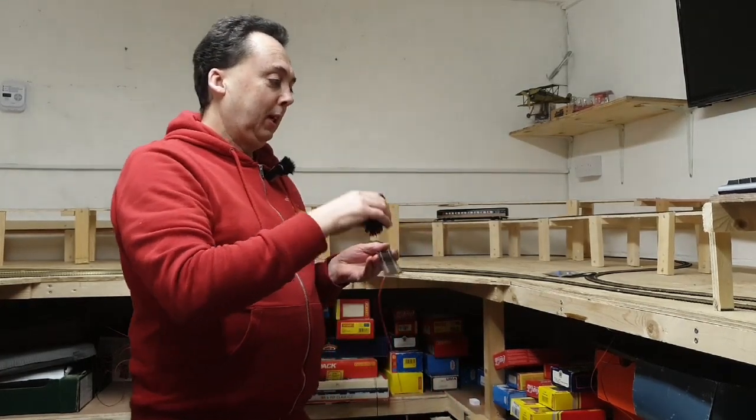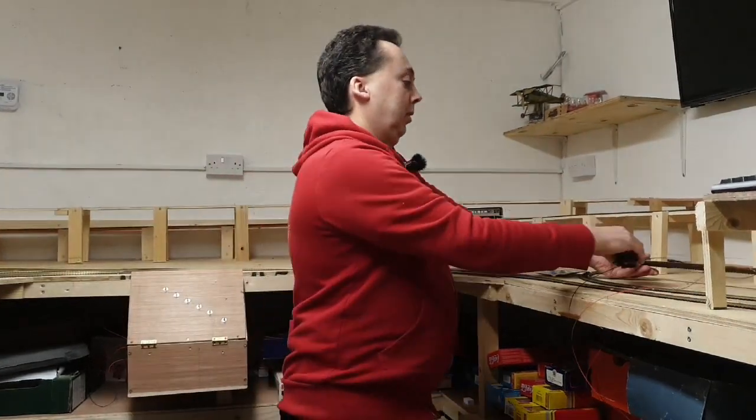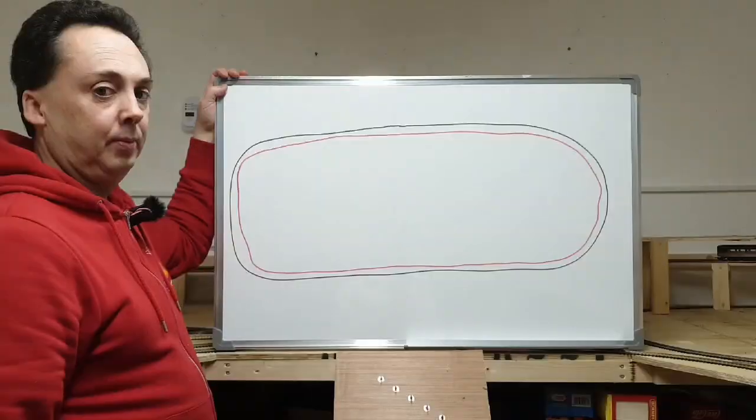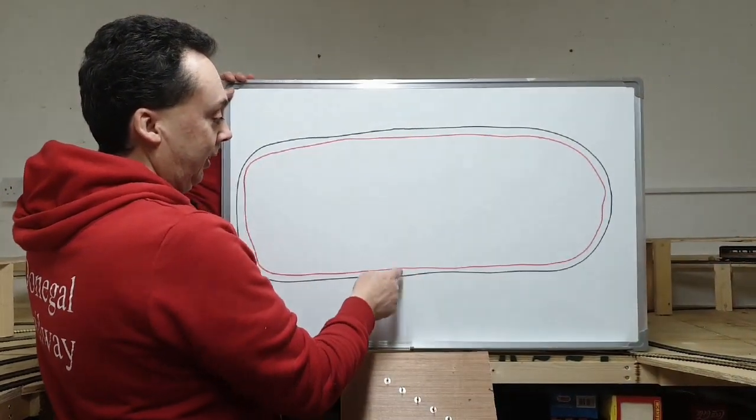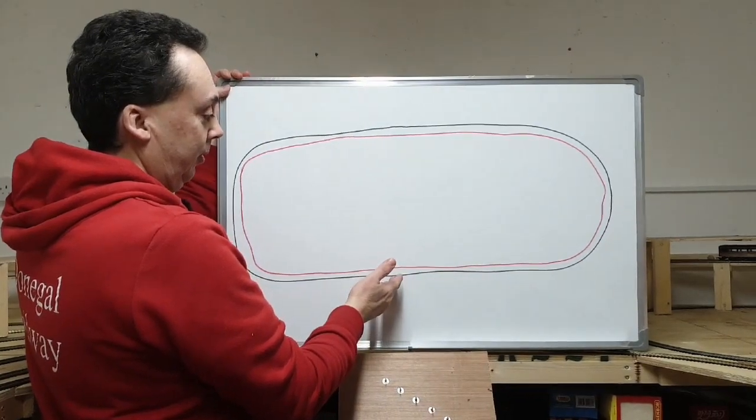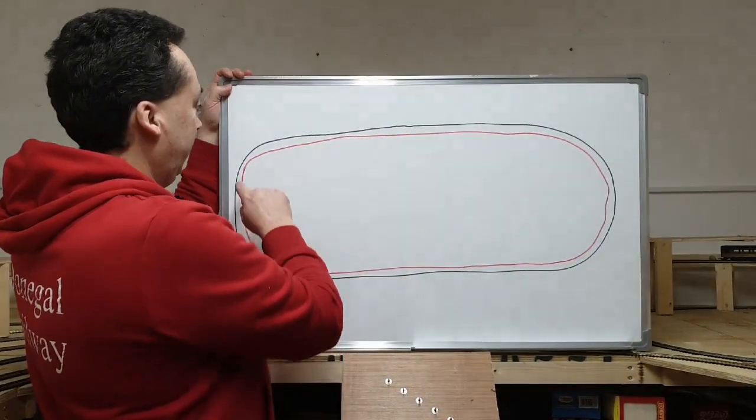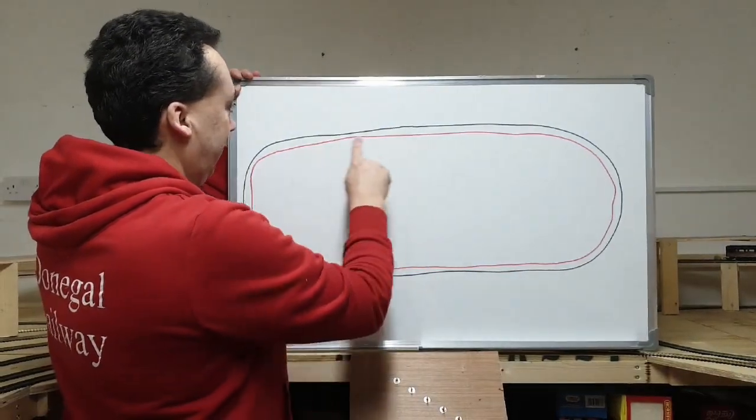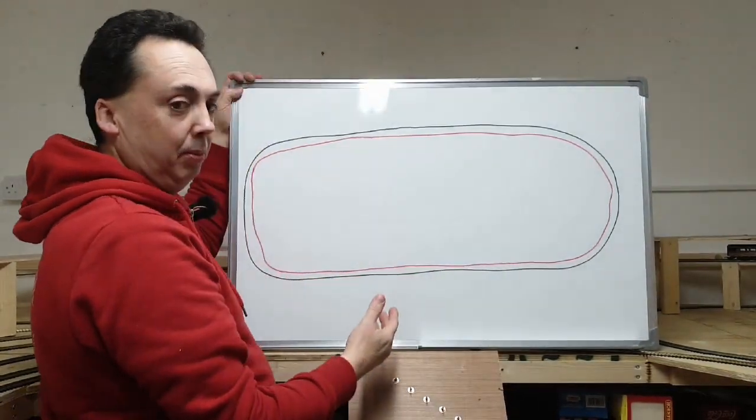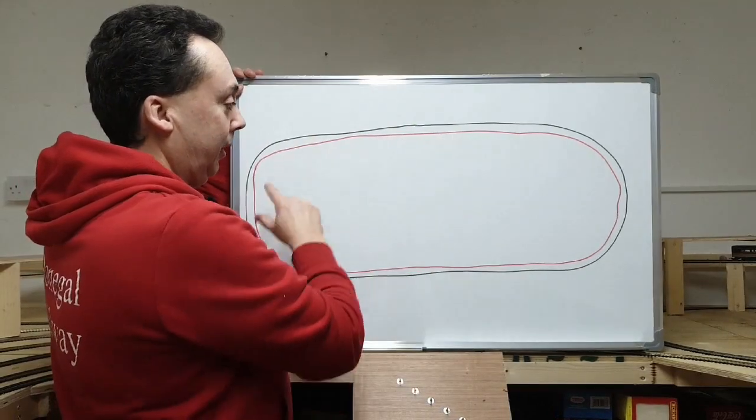So if we look at a diagram of a normal circuit. So here's a simple diagram of a simple oval. I highlighted each rail red for positive, black for negative, and as you can see, all the way around, the black stays on the outside and the red stays on the inside. So there's no problem, the power will keep going around, the train will keep running.